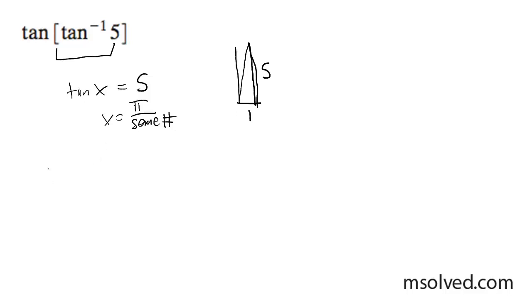But it doesn't matter, because that's the same thing as just saying tangent, once you figure that out, tangent of pi over some number is simply going to be y over x, which is just 5. So in this case, it's just 5. That's the answer.